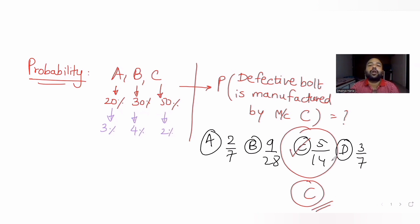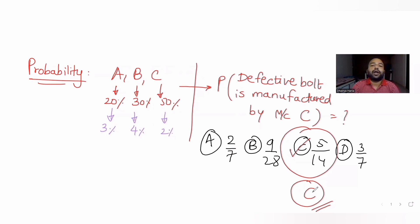I hope you have understood how to solve these types of questions on probability dealing with conditional probability — if a defective bolt is picked, what is the probability of it being manufactured by machine C? The answer is 5/14. I'll see you tomorrow with another question. Stay tuned, and do like, share, and subscribe to my channel. Thank you.